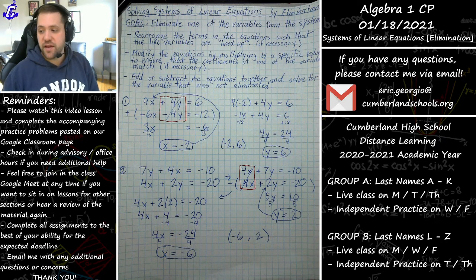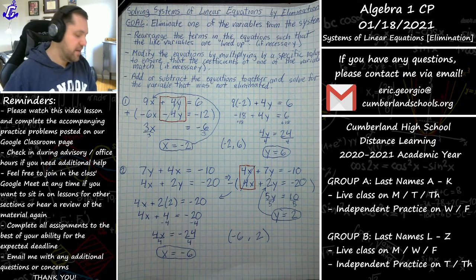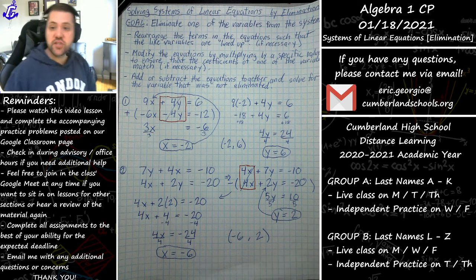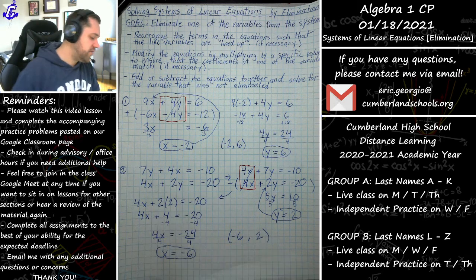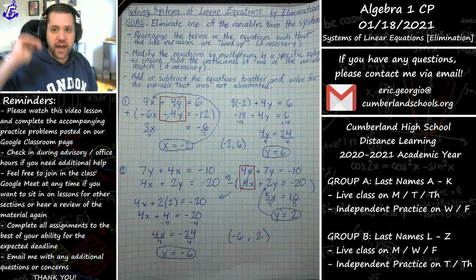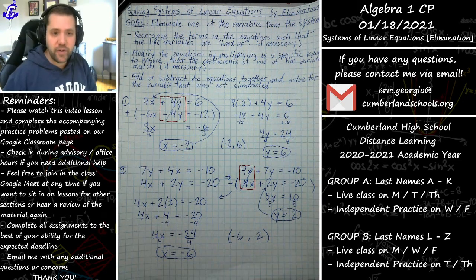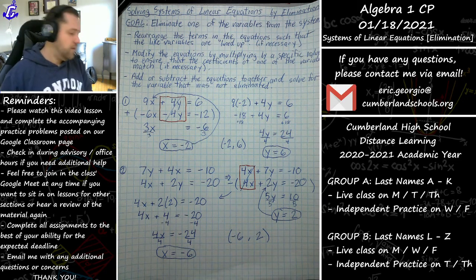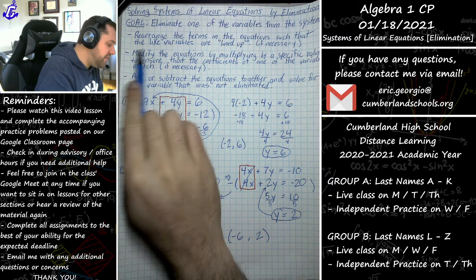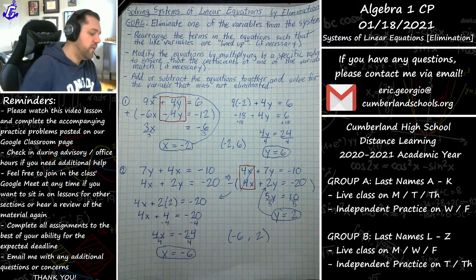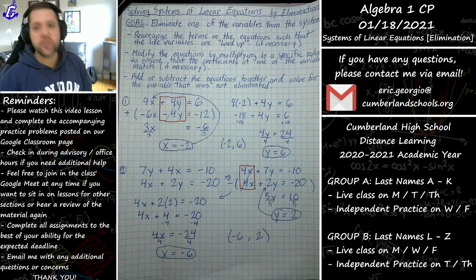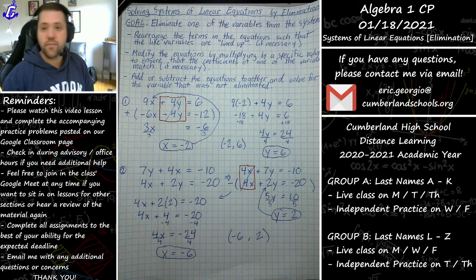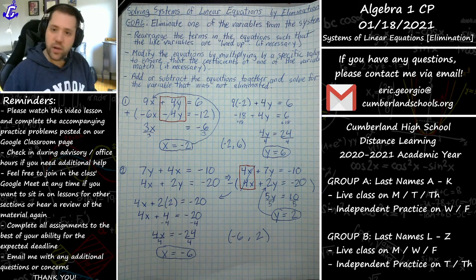You might think to yourself: what if the coefficients don't match up? We've seen here that somewhat coincidentally when we move terms around we get matching coefficients. But what if that's not the case? That's where we have to take the second step into account — multiplying one of the equations by a specific value to ensure that the coefficients match up.